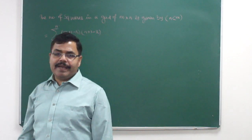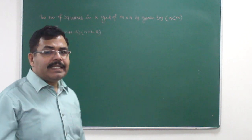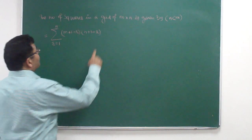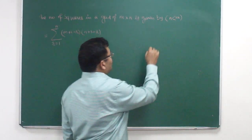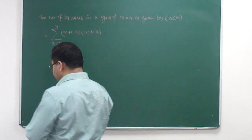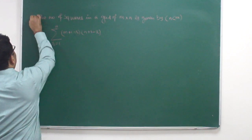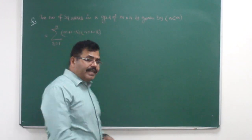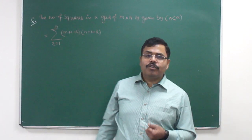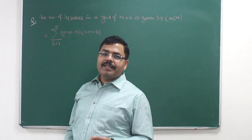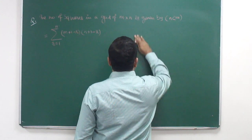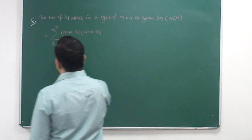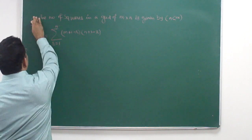Out of n and M, n is less than M, and therefore this formula can be applied to find the number of squares in a grid of n × m. To know the formula is one thing; to apply it is a different thing. So let me explain with a question.